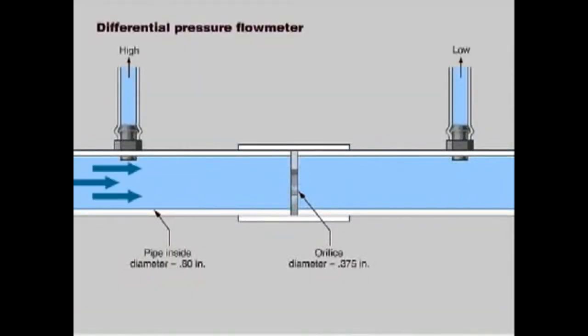The concept is very simple. If you place a restriction in the flow, there will be a pressure loss that is proportional to the flow rate. The more fluid you try to jam through the restriction, the greater the pressure loss. So if you measure the differential pressure, you can use it to calculate the flow rate.